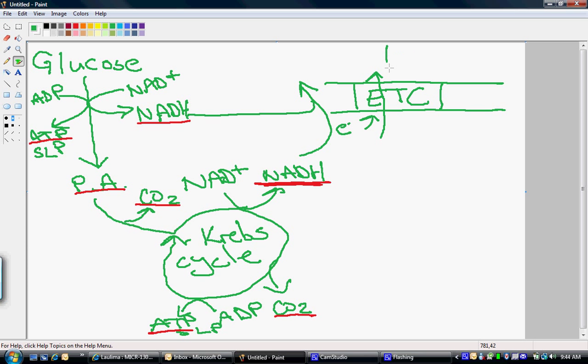This creates our proton gradient or chemiosmotic gradient. When NADH becomes oxidized or loses its electrons, it goes back to NAD+, and this goes back to either glycolysis or the Krebs cycle and takes some more electrons from the next incoming glucose.